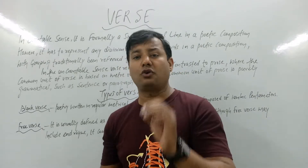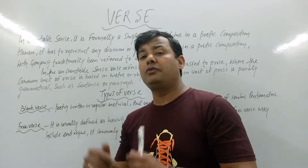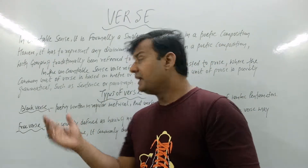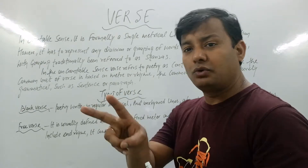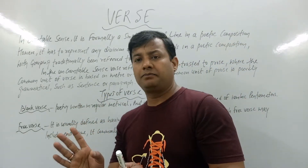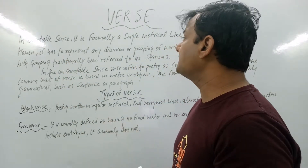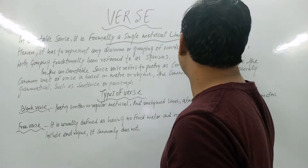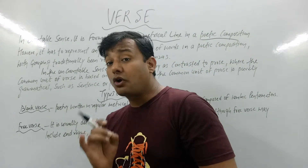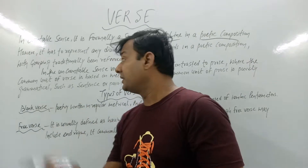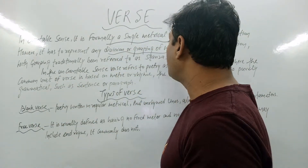Let's start another class so that you can know the real terms of verse and how we can use the types of verses. Verse can be defined in two terms: countable and uncountable. In a countable sense, it is formally a single metrical line in a poetic composition — a single metrical line in a particular poetical composition — and it represents a division or grouping of verse.